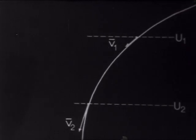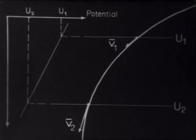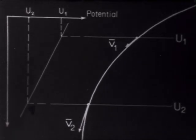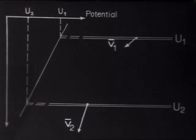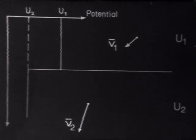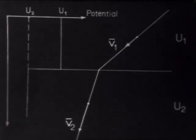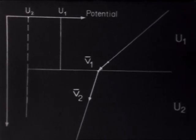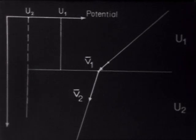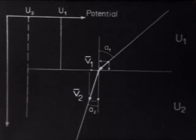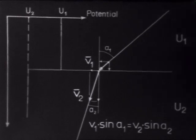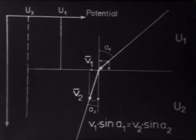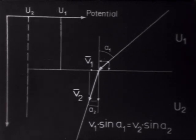In order to study the direction change of the electron path more closely, we may examine a small part of the path with a constant potential decrement. This may be divided into two areas with the potentials U1 and U2. As the electron is not influenced by the field with any force perpendicular to the field direction, the velocity component parallel to the dividing surface between U1 and U2 remains constant. This gives the condition for the direction change of the electron beam.